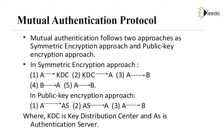In the public key encryption approach, user A first communicates with an authentication server. The authentication server replies back to user A, and with the data received from the authentication server, user A then starts communication with B. Here the Key Distribution Center and authentication servers play an important role in proving the identities of users.